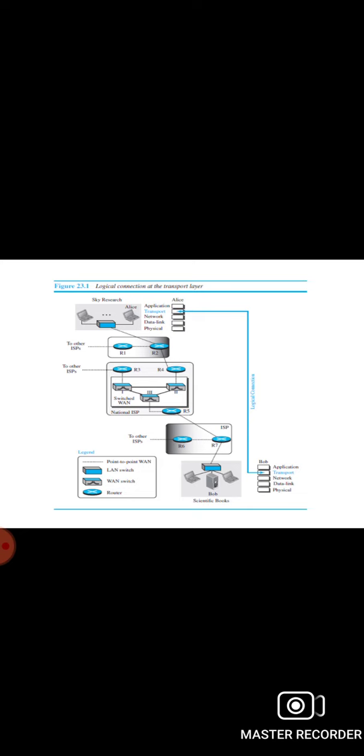Flow and error control at this layer is performed end-to-end rather than across a single link. One of the protocols is not involved in flow and error control, which we'll discuss in future slides. TCP and SCTP use sliding windows for flow control and an acknowledgement system for error control.